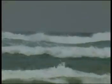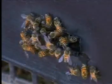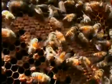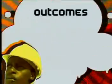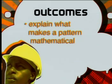Then we will move to a more tranquil and remote setting — the seaside — to watch the wave patterns as the waves break on the shore in never-ending cycles. Then from the sea to the African honey bee. By the end of this lesson you should be able to identify and describe patterns, describe their use and purpose, and explain what makes a pattern mathematical.